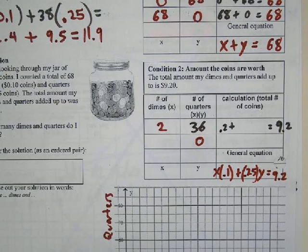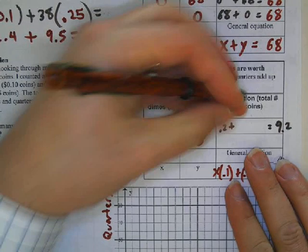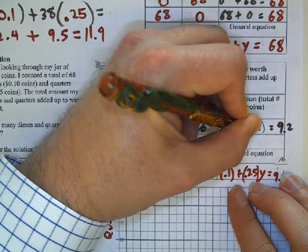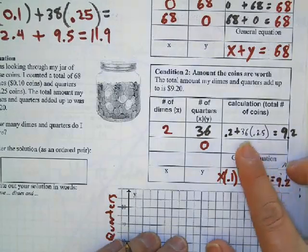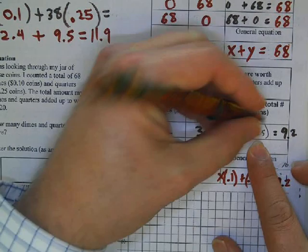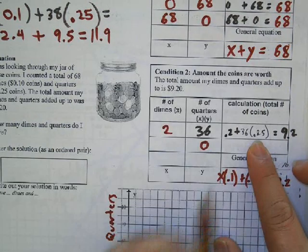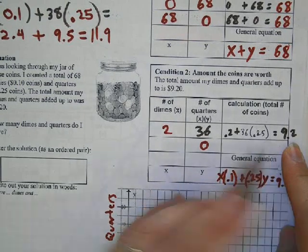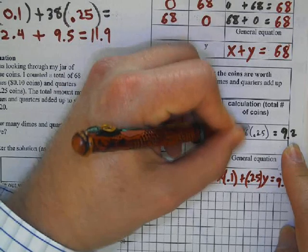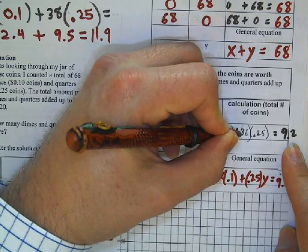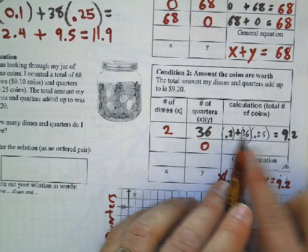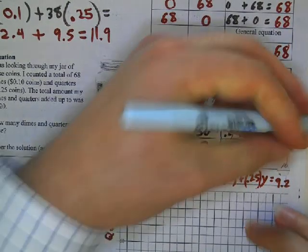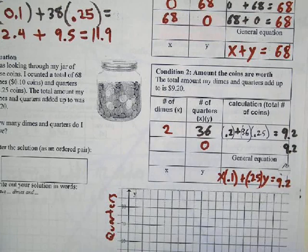What did we do? We had 36 times 0.25 because a quarter is worth 25 cents. If I multiply 36 times 0.25, that's going to give me nine dollars. And if I add the 20 cents together, that adds it to 9.20. If you're a little confused on this, watch this little part just again. This is my 20 cents, this is my nine dollars, it adds up to nine dollars and twenty cents.